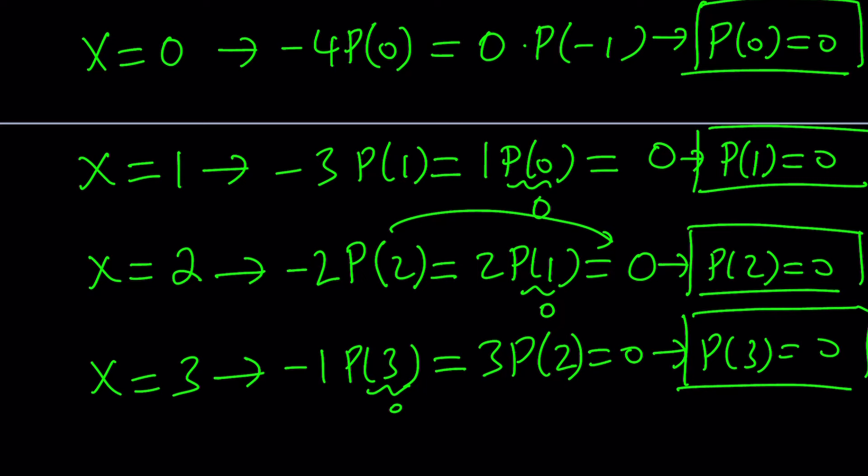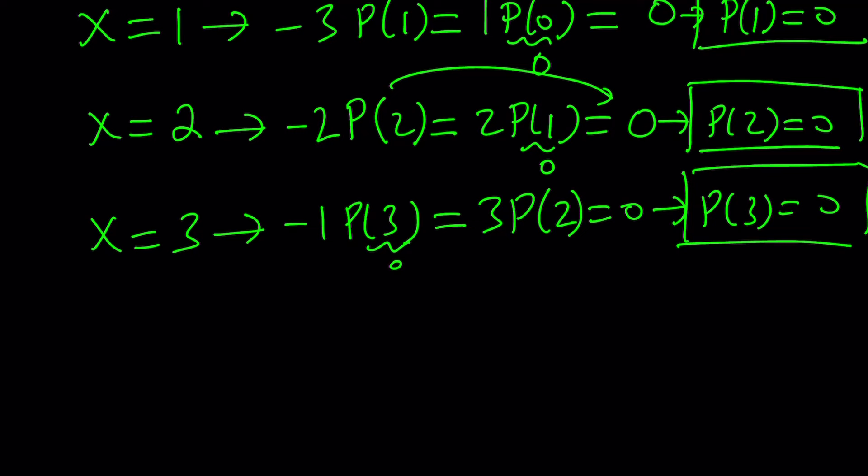So far, we got everything equals 0. And we're hoping that this pattern will continue. What happens if I replace X with 4?